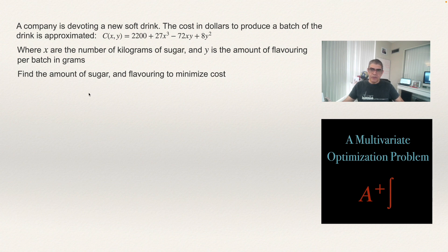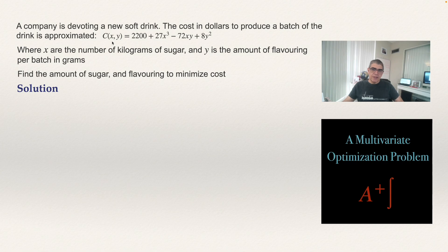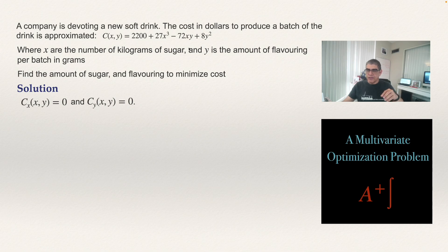For solving this, we are going to take the partial derivative with respect to X and the partial derivative with respect to Y, and set each partial derivative equal to zero to find the solution. So we find the derivative of the cost function with respect to X, and the derivative with respect to Y, make both equal to zero, and then solve this system of equations for X and Y.